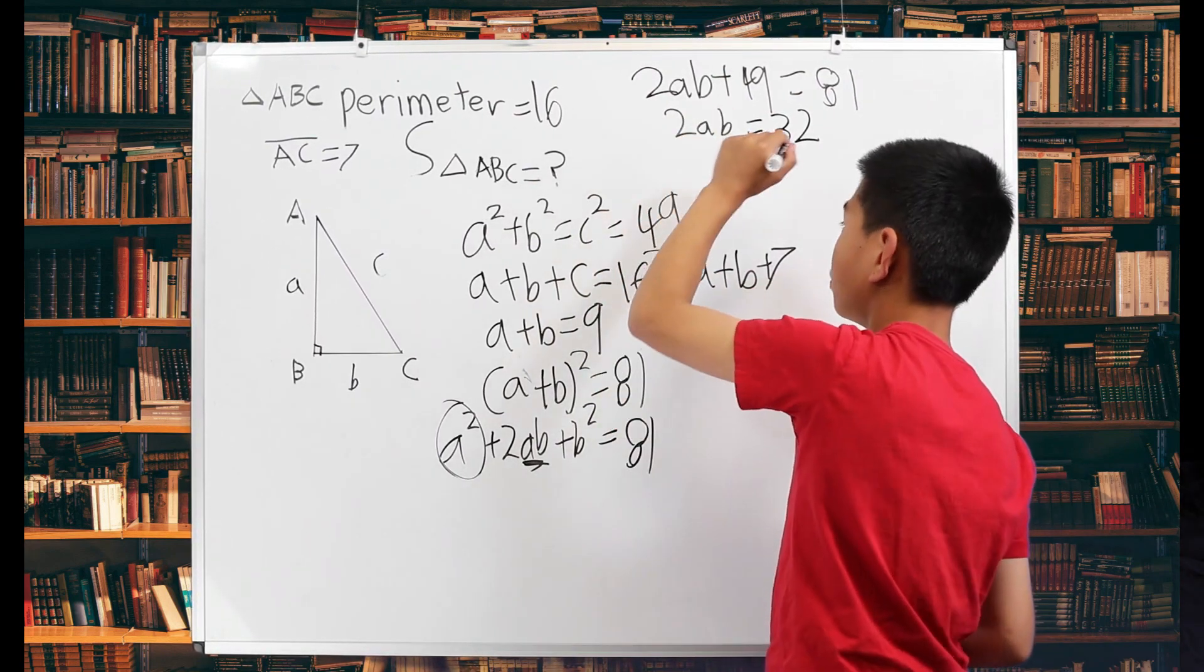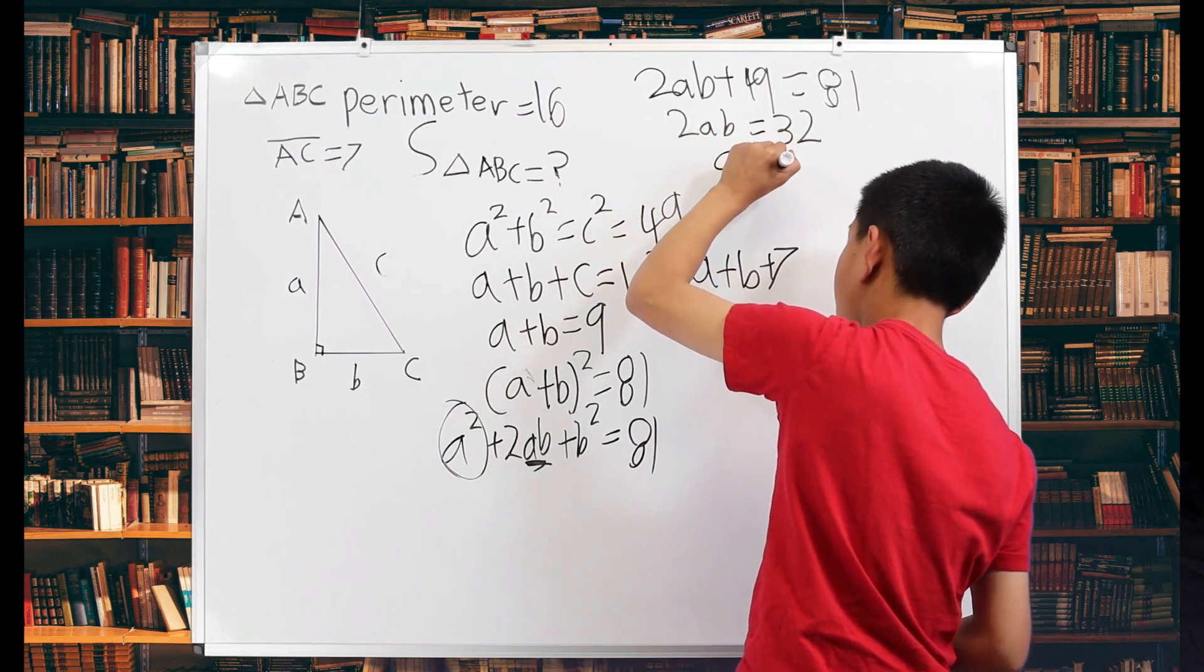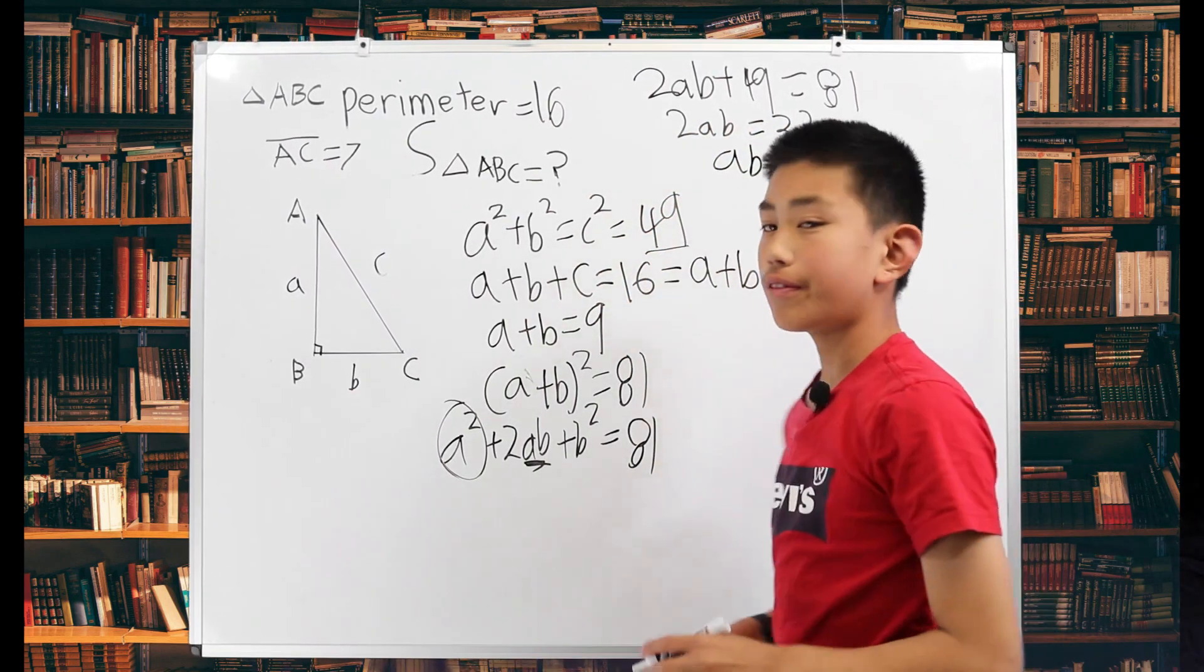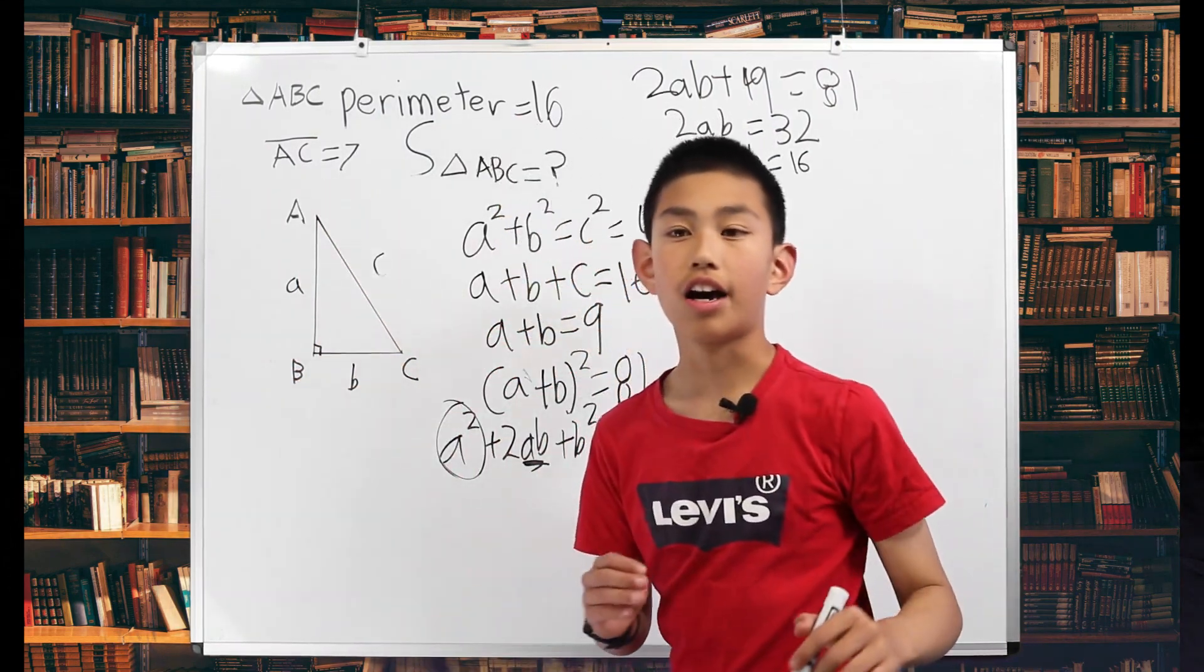Divide both sides by 2 to get AB is equal to 16. Now we found the area if this was a rectangle, but it's not.